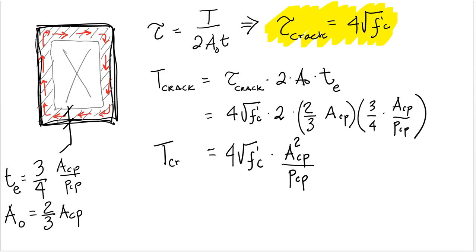Which is the torsional moment that if applied to a cross section would create cracking along the length of the member. This formula right here, substituting this expression we find, so A₀ is 2/3 ACP and equivalent thickness is 3/4 of ACP divided by PCP. We find this expression right here that the cracking torsional moment is equal to 4√f'c × ACP²/PCP.